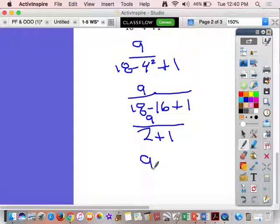So, we have 9 over 2 plus 1. All right. So, then, I can rewrite it. 9 divided by 3. And that is 3.